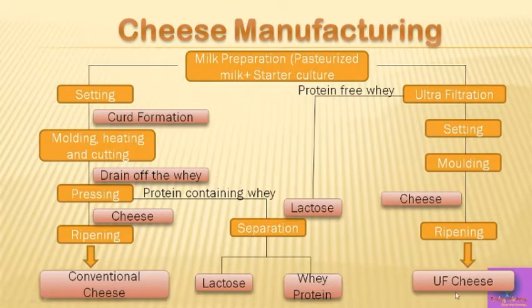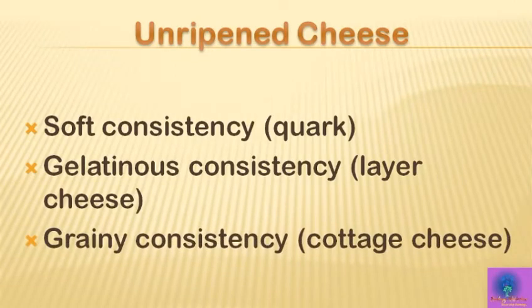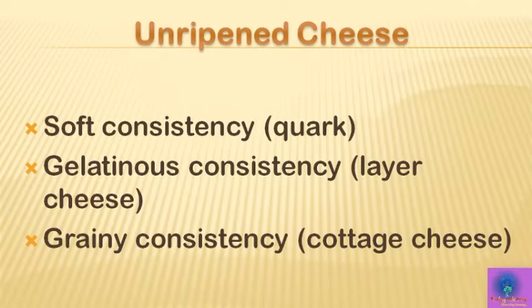Alternatively, conventionally produced whey can be concentrated by ultrafiltration and added to the curd, or milk can be treated with starter culture or rennet and then concentrated by ultrafiltration. In the case of unripened cheese, which may have a soft, gelatinous, or grainy consistency, the whey is usually separated after souring. Grainy unripened cottage cheese is generally produced in continuously operated coagulators with special temperature regulation, after which the curd grain can be washed, cooled, and dried.